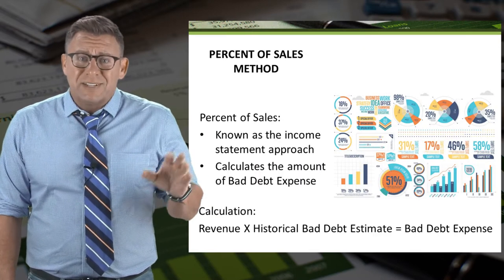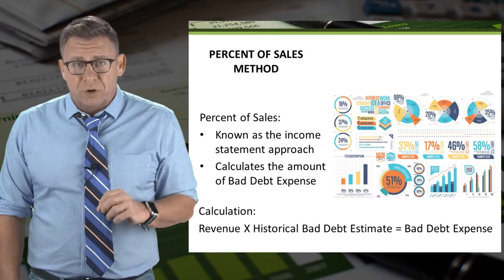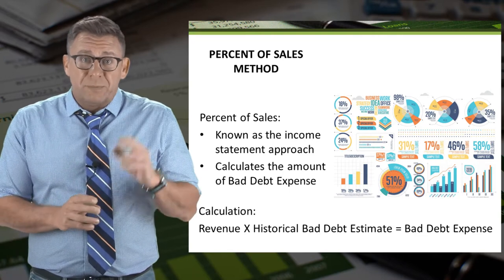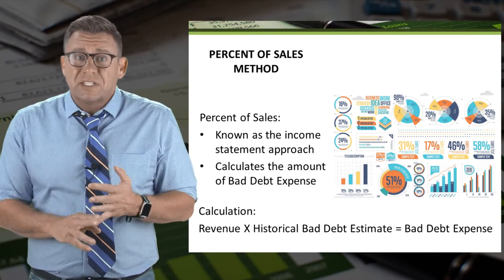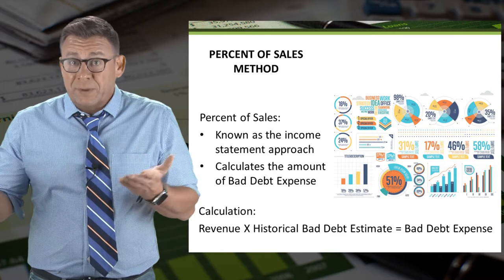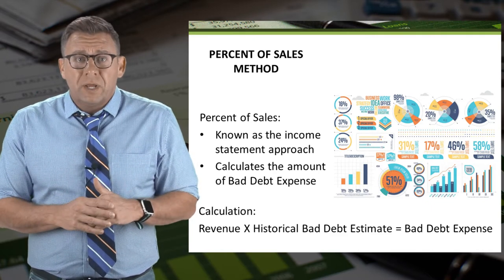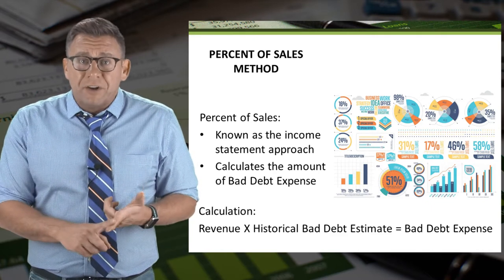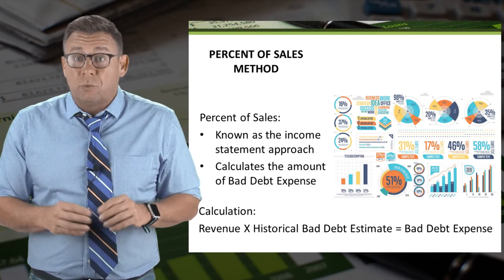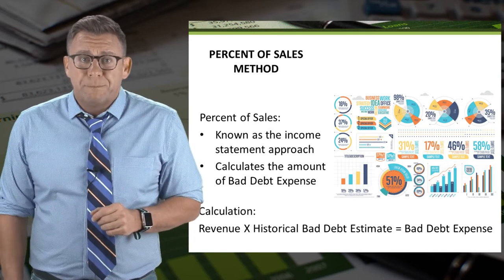The percent of sales method is sometimes called the income statement approach to estimating bad debt expense because it focuses on the income statement account bad debt expense. The calculation is pretty straightforward: it is revenue times some historical bad debt rate, and this equals our bad debt expense.